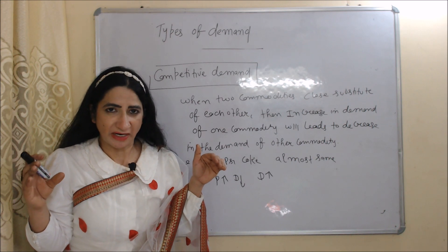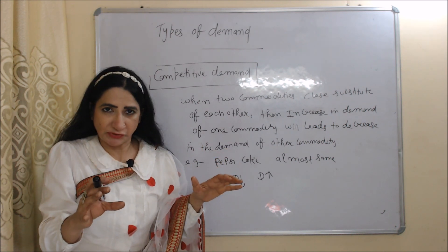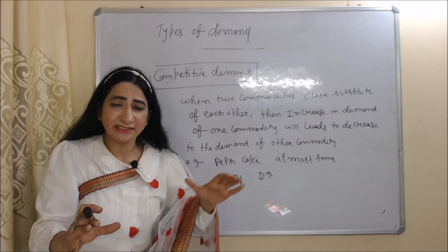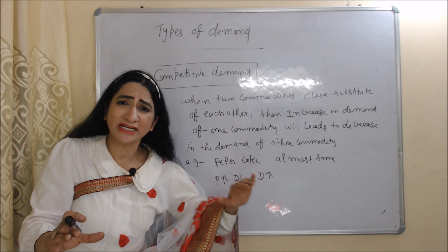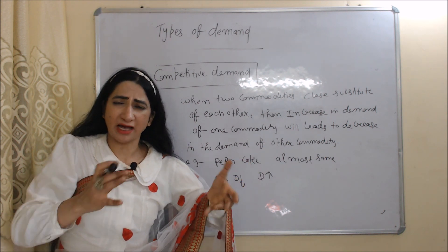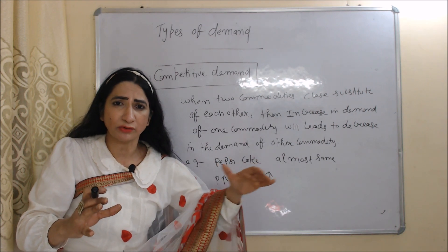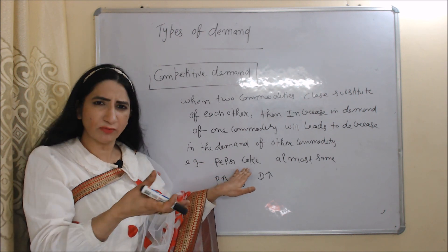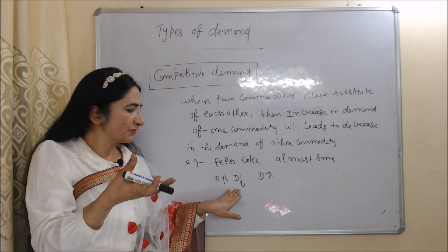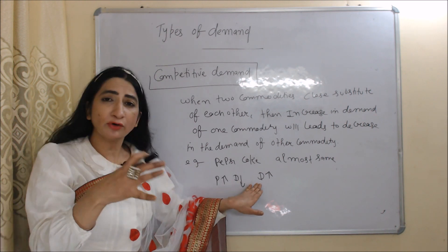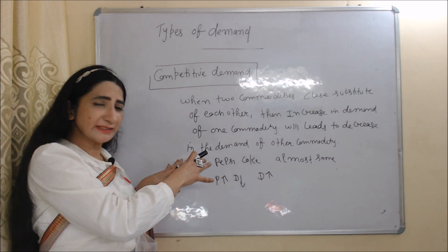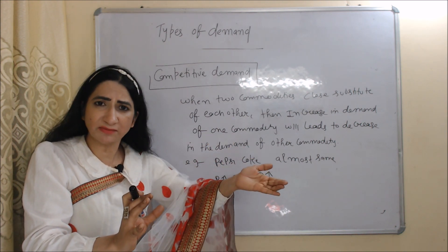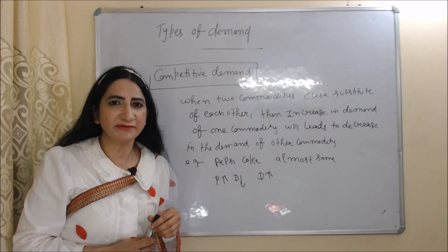Next is competitive demand. When two goods are close substitutes — or we can say almost the same — then increasing demand of one good will lead to decreasing demand of the other. For example, Pepsi and Coke are almost the same. If price of Pepsi will increase, demand for Pepsi will fall, but demand for Coke will increase. So when goods are close substitutes, increasing demand of one leads to decreasing demand of the other — this is called competitive demand.